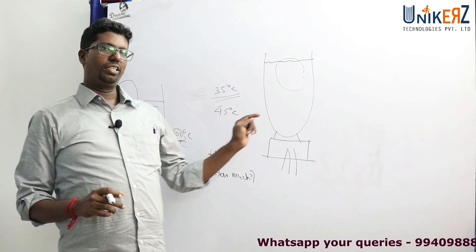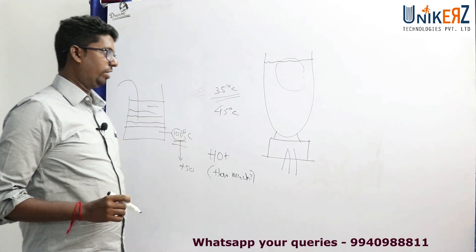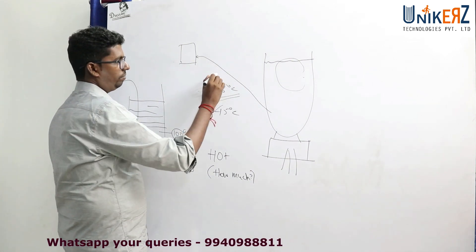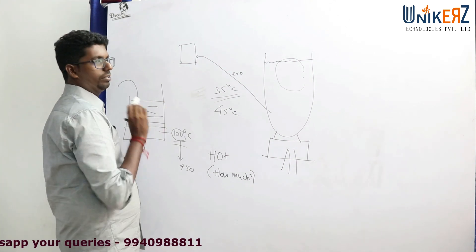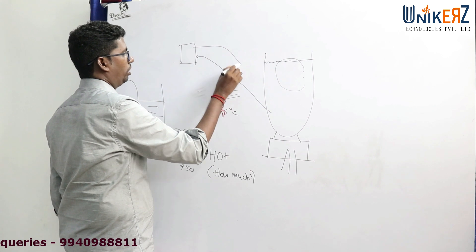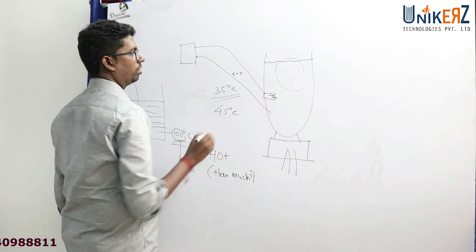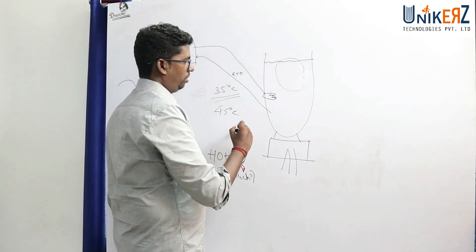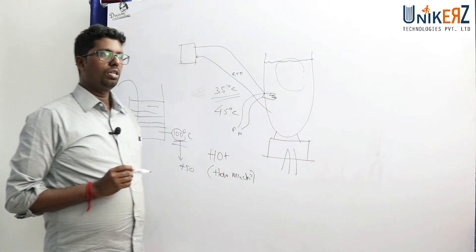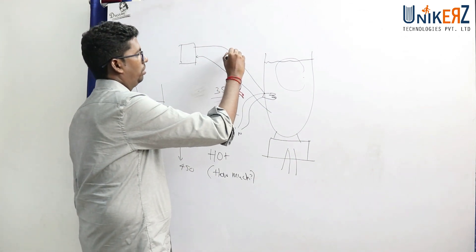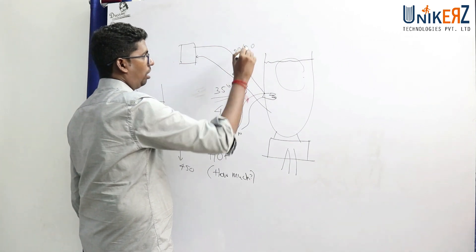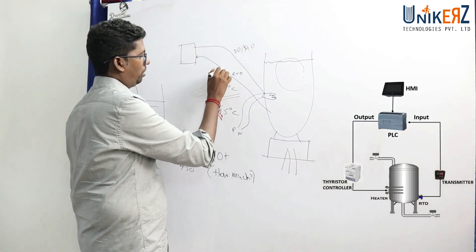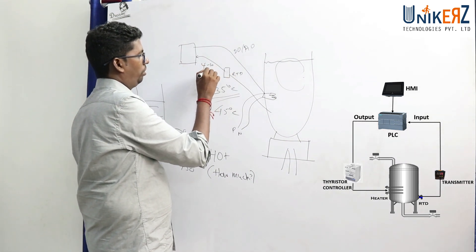This is the temperature control. So we are going to control using the PLC — how do we design it? PLC with RTD feedback. The output is a heater — straight away the heater. Control the power straight away. The output is a digital output.